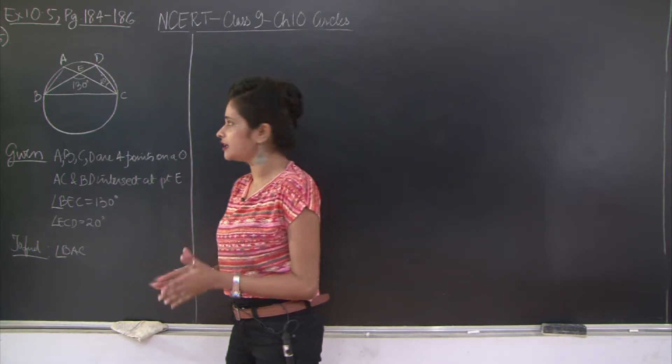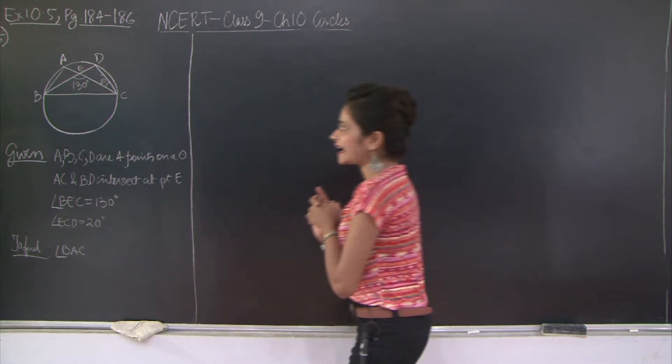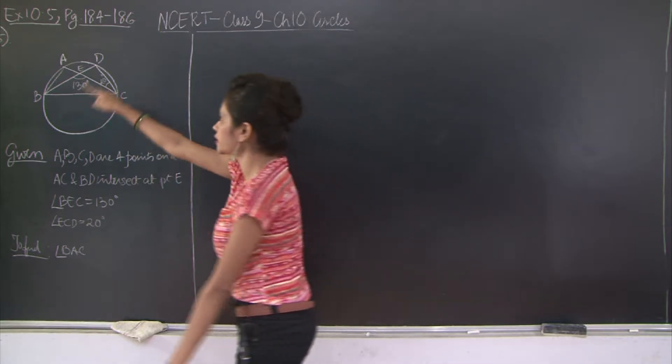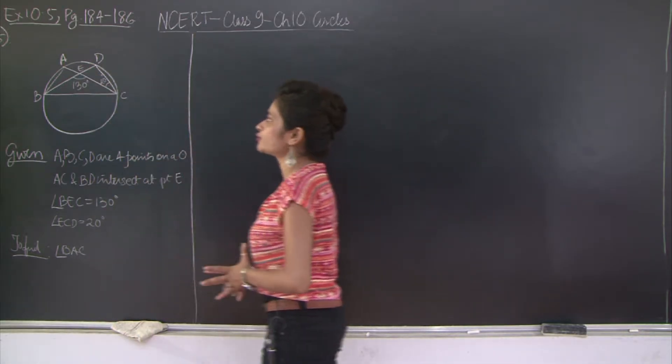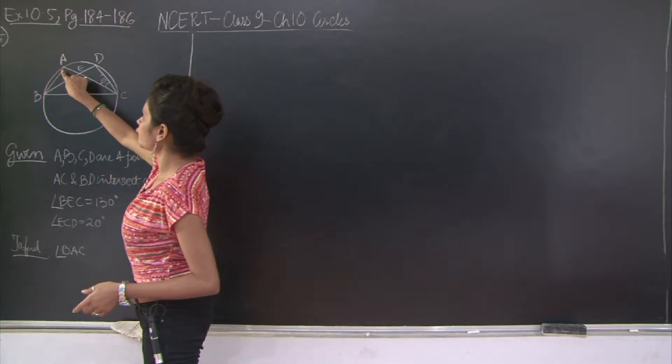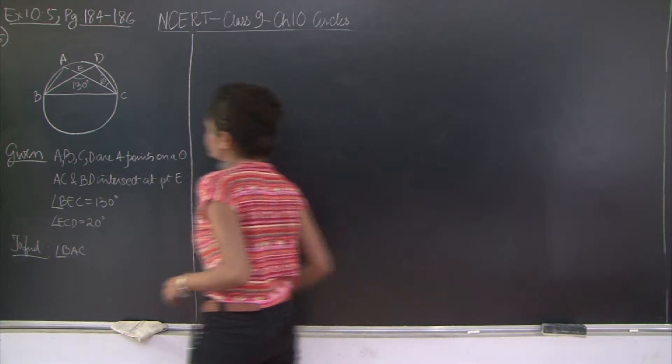We've been given a circle wherein there are points A, B, C, and D on the circumference of the circle. The lines AC and BD intersect at angle E, and as you can see angle BEC is 130 degrees and angle ACD is 20 degrees. You need to find the measure of angle BAC.